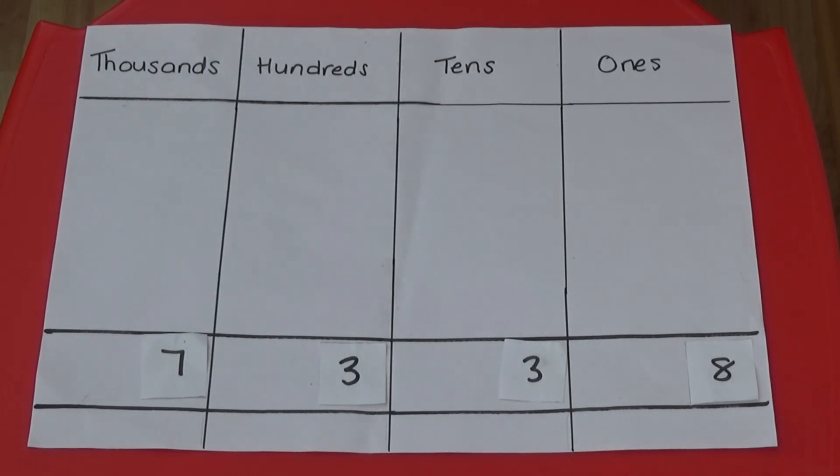I'm going to put 8 Ones counters in the Ones column and exchange the remaining 10 Ones for a 10s counter which I'll put under the answer box.